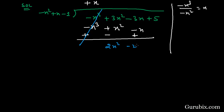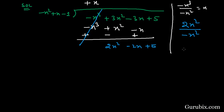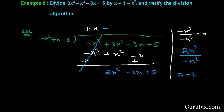After cancellation, we have positive 2x squared, minus 2x, and positive 5. Now to find the next term in the quotient, we divide 2x squared by the first term of the divisor, which is minus x squared, giving us minus 2. So the next term in the quotient is minus 2.